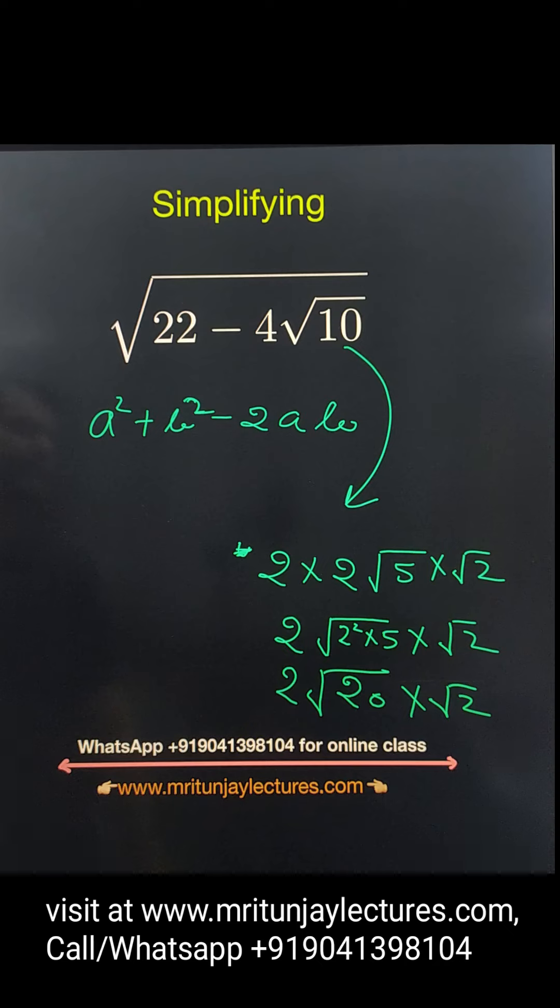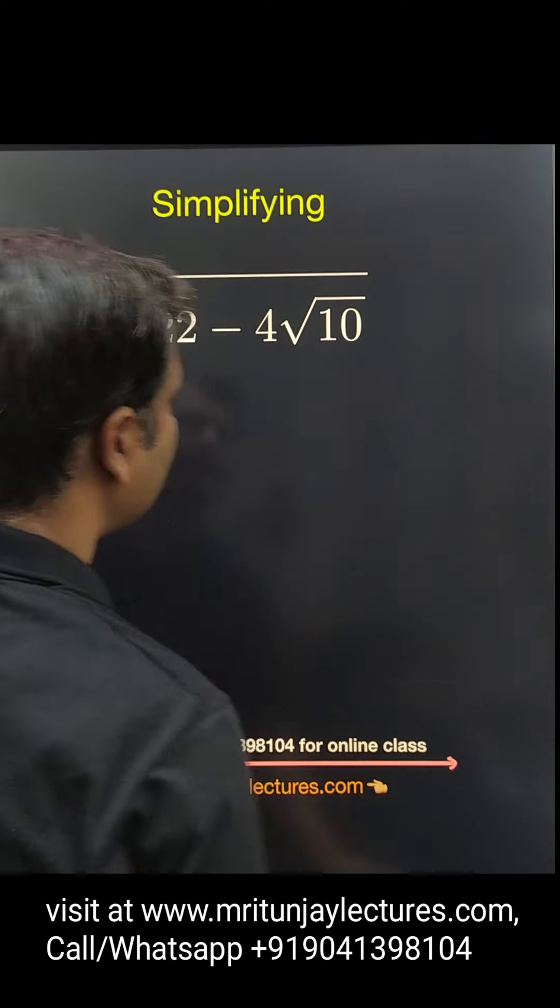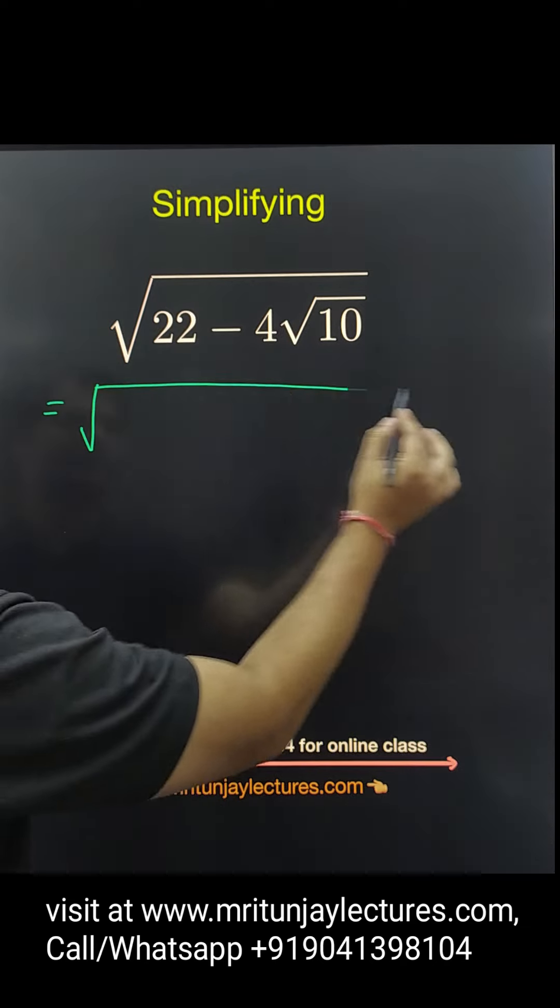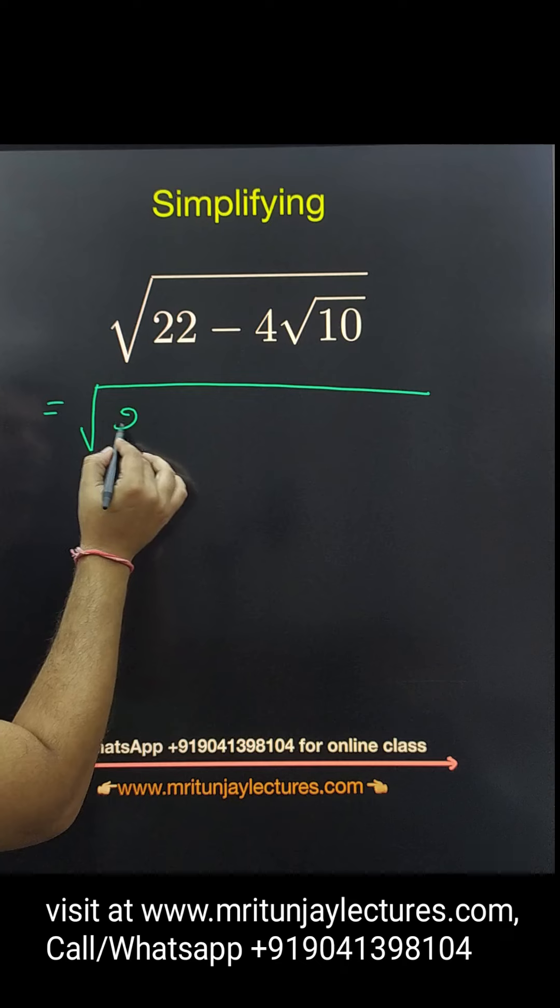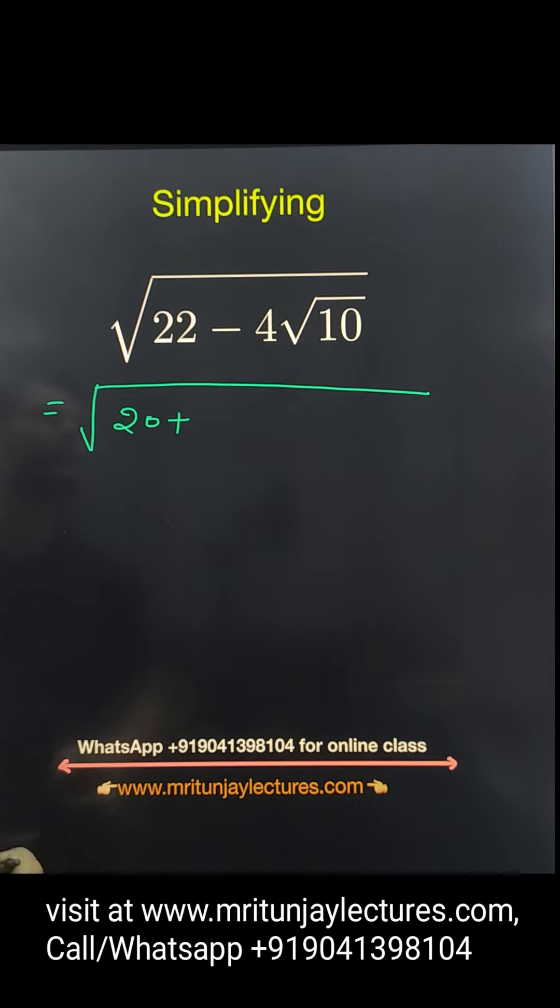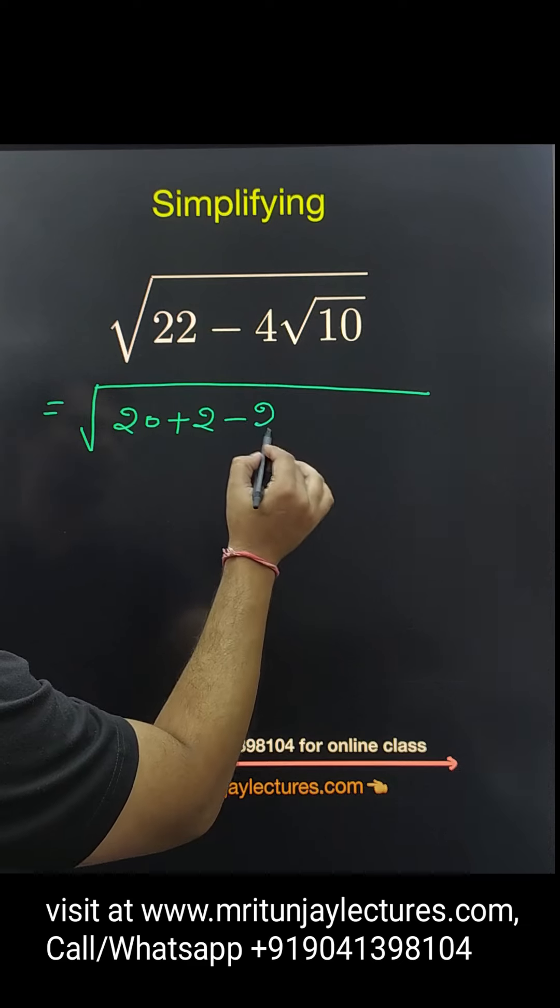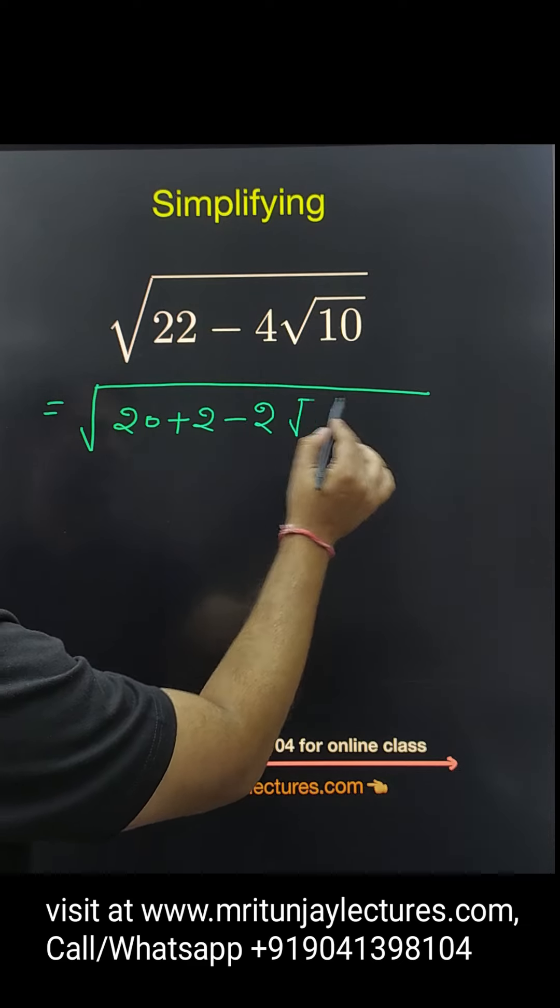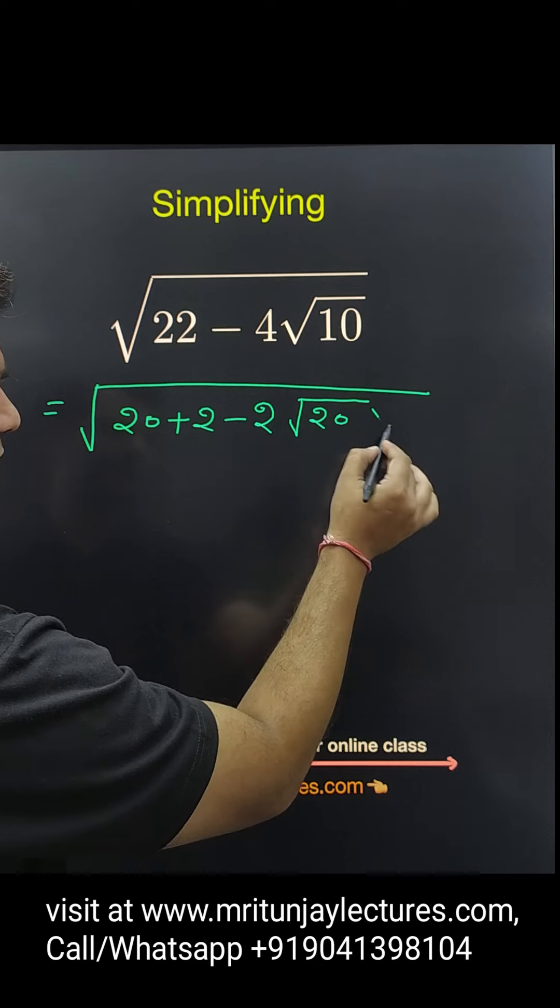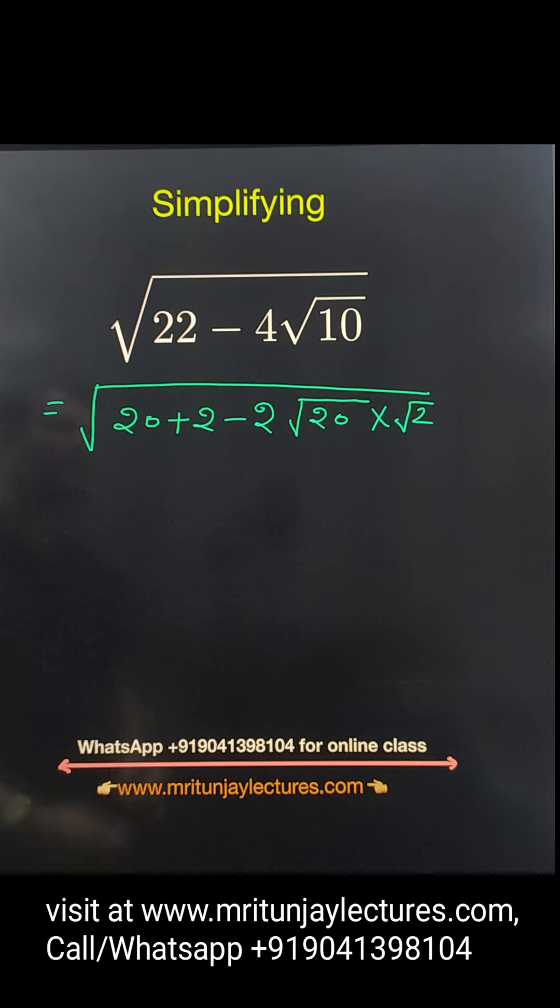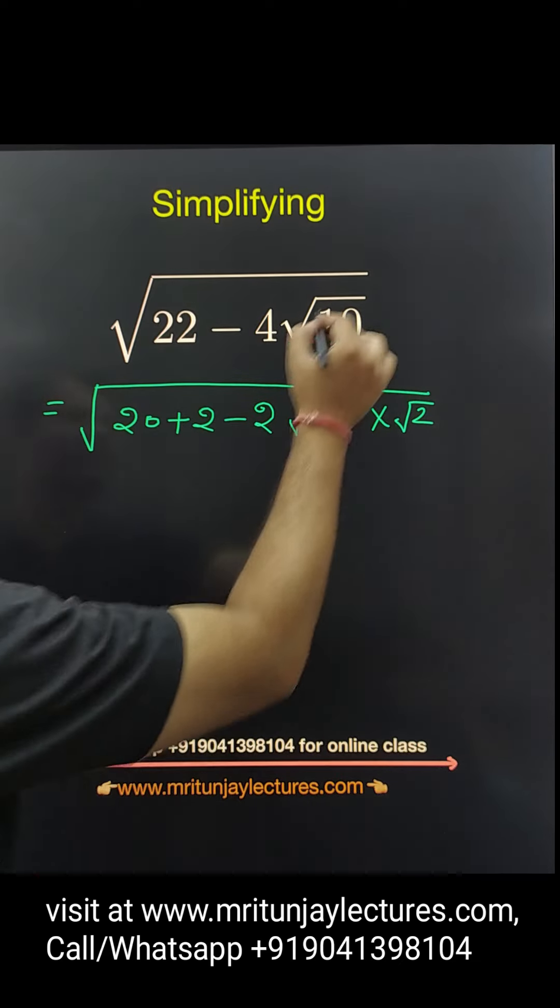So I hope it's clear. Basically you can write now here that one is converted 20 plus 2. Here that one written 2 and this one is root 20 into root 2. OK, 4 basically that one breaks into 2 into 2 root 5 into root 2.